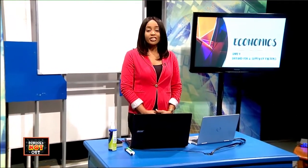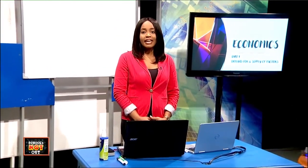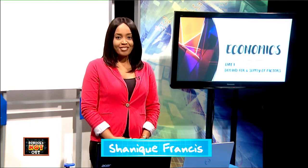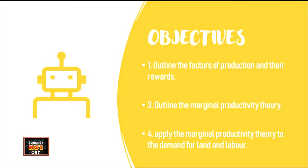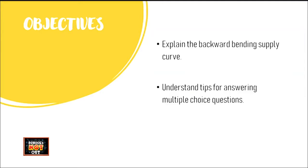Welcome to Schools Not Out, your daily classroom for CSEC and CAPE students. Today's lesson is on CAPE Economics Unit 1, where we'll be focusing on the demand and supply of factors. I am Shanique Francis. Our objectives for today include outlining the factors of production and their rewards, as well as the marginal productivity theory. We will also look at applying the marginal productivity theory for land and labour, explaining the backward bending supply curve, and understanding some tips for answering multiple choice questions.